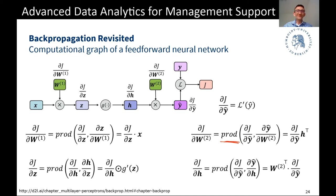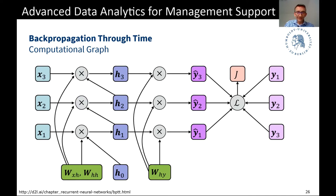The computational graph for a recurrent neural network — it's a good exercise to reason how it would look. I'm considering a sequence of three elements, so T equals one, two, and three. Hence we have X1, X2, X3, Y1, Y2, Y3, network outputs Y hat 1, Y hat 2, Y hat 3, and the corresponding hidden states H1, H2, H3, plus the initial hidden state H0.